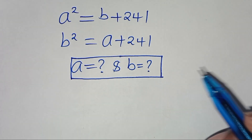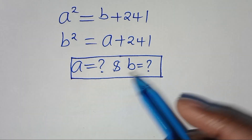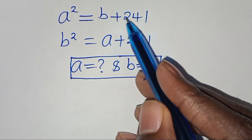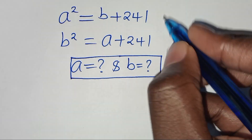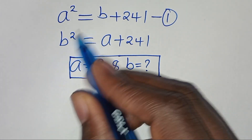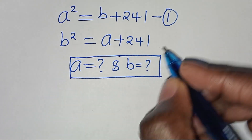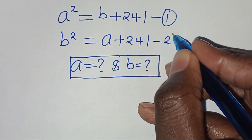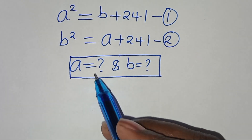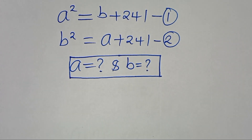Hello everyone, you are welcome to solve this nice algebra problem. We have a squared is equal to b plus 241 — let's call this equation 1. Then b squared is equal to a plus 241 — let's call this equation 2. The question is: what is the value of a and what is the value of b?